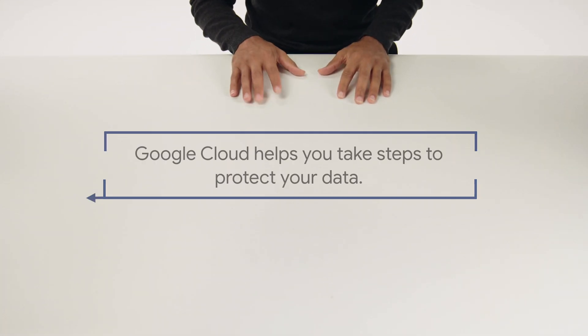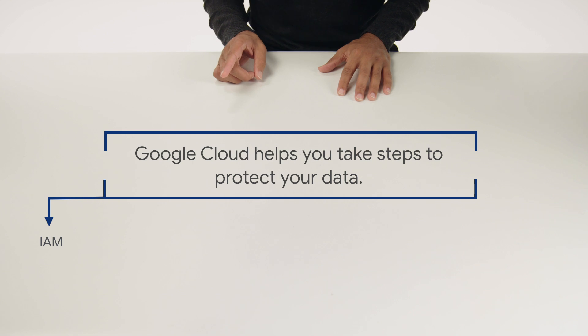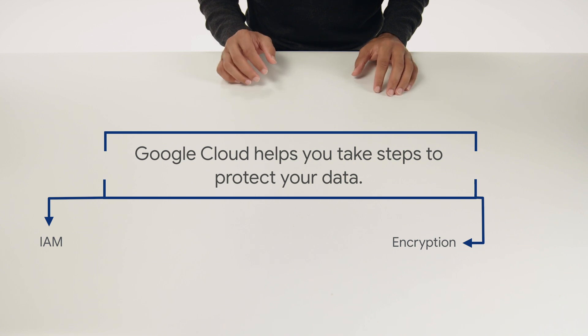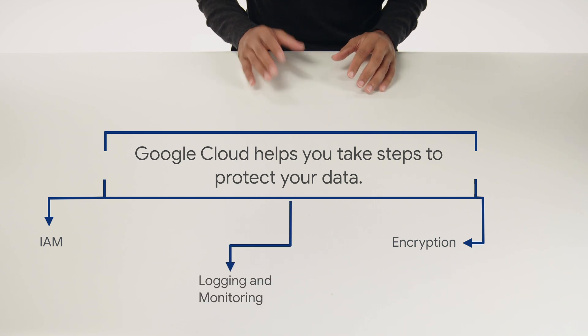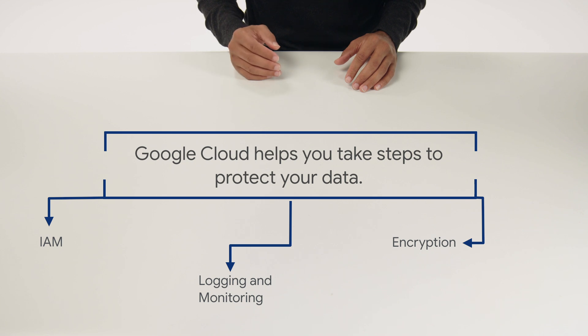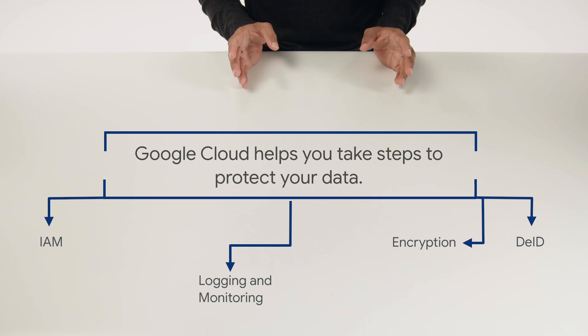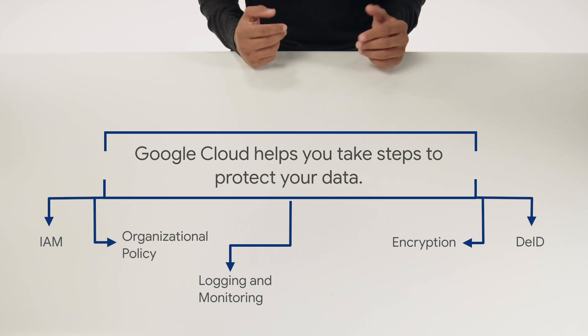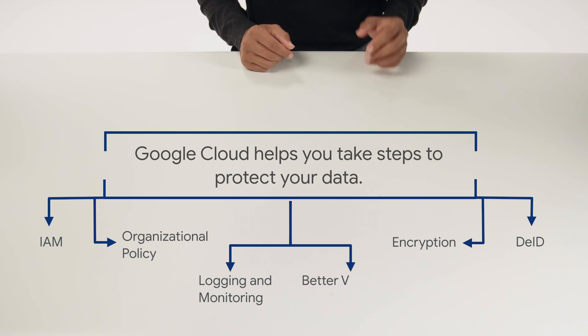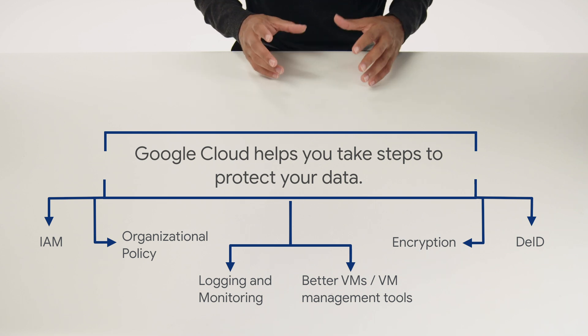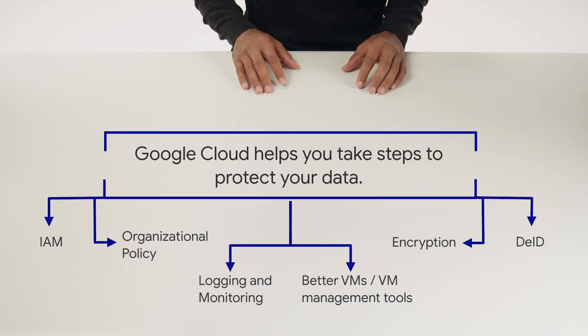Luckily, Google Cloud provides a lot of tools and services to protect its users, including but not limited to: IAM for controlling access to data resources; encryption to make sure stored and transferred data can't be read even if it is stolen; logging and monitoring to make sure that you can track what's happening in your system; DLP for making sure PII information is stripped before it's ever stored in your system; organizational policy to set rules on who can access what data and where it's stored; and better VMs or VM management to make sure that the machines you use are secure. Let's see how they work.